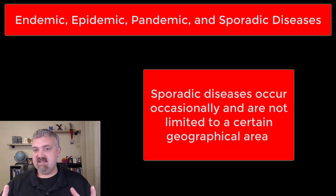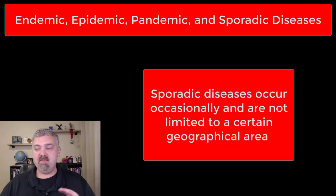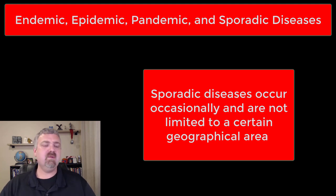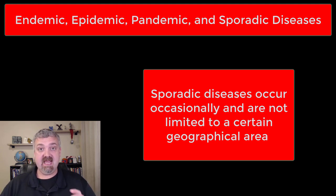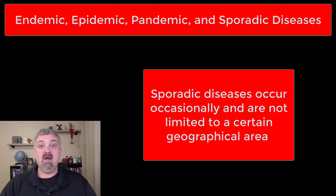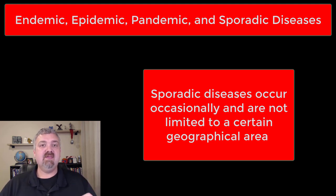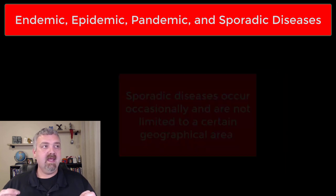Let's start with sporadic diseases. These are ones that only occur occasionally — they kind of pop up. There's no geographical location associated with them. So I would say tetanus, rabies, even the plague are examples of sporadic diseases. You might see just a handful of cases popping up with no geographical boundaries.